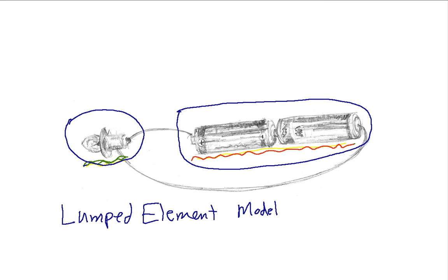And the alternative to a lumped element model is what you often see called a distributed element model. Distributed elements are things like a wire when you're looking at how fast it takes for electrical signals to propagate through that wire. Or perhaps if you're looking at an antenna. For example, your cell phone has an antenna and that antenna radiates electrical or electromagnetic energy.